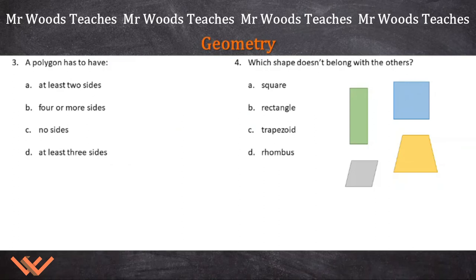Number 3. A polygon has to have what? Two sides? Four or more sides? Well, there's four sides, and that is a polygon. No sides, so it can't be that. It can't be this because it's not closed. At least three sides. It has to be at least three sides. All I did was draw pictures.